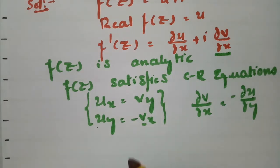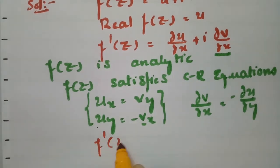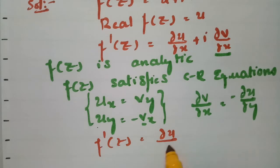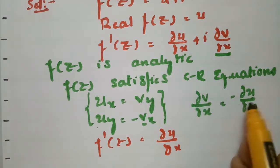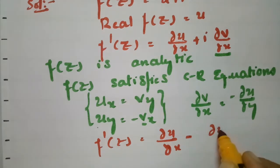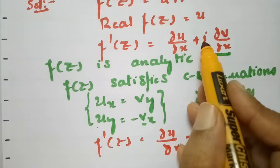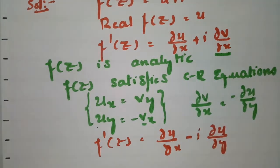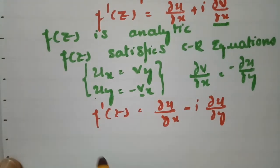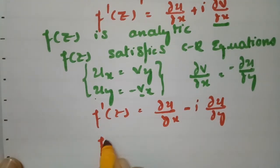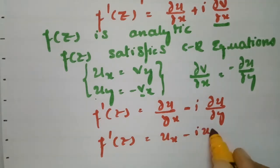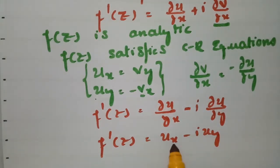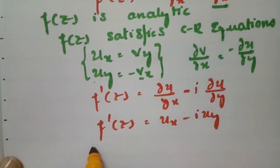Therefore f'(z) = ∂u/∂x + i·(−∂u/∂y), since in place of ∂v/∂x I am writing −∂u/∂y and there is already a factor of i. So f'(z) = ux − i·uy.